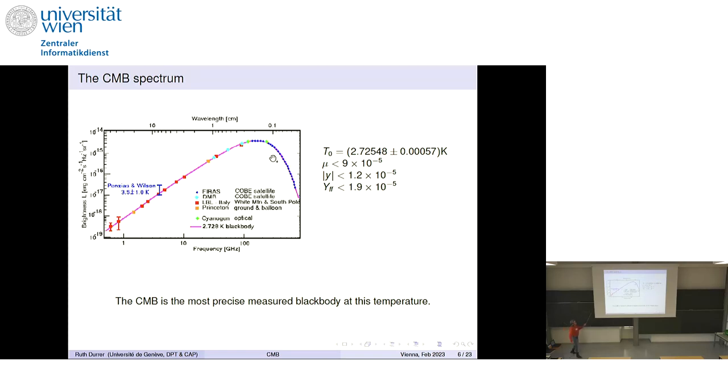This is the spectrum as it has been measured now. Here you see data from 1991. That's the most recent data we have on this spectrum. Unfortunately, one would have to launch a new satellite and nobody wants to pay for it because everybody is scared it might not give us much surprise because this is actually the most precise ever measured black body at this temperature. And this is the temperature. For us cosmologists, this is amazing. We have a number which we know to three or four digits.